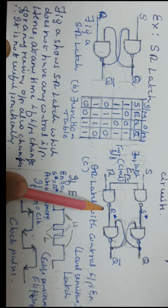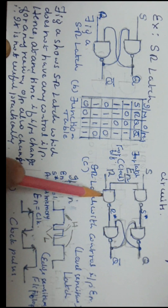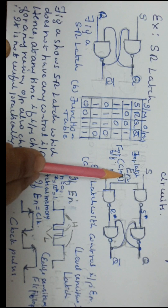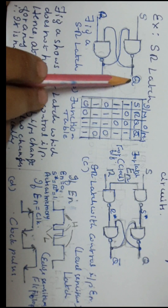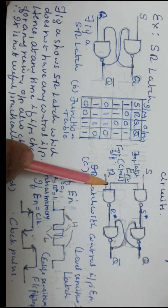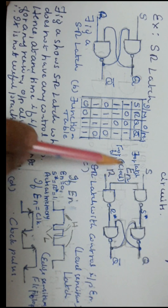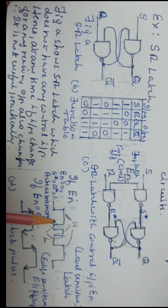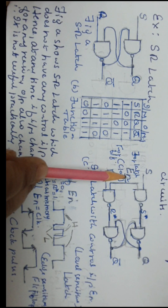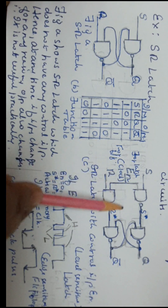Hence this circuit is modified by adding two more NAND gates. The two new inputs are tied together and given as an enable input, also called the control input. The same S and R inputs and the same outputs Q and Q-bar are present. This circuit now has a control input and can behave like either an SR latch or an SR flip-flop, depending on the type of enable input. If an enable bit is given, it is an SR latch; if a clock input is given, it is an SR flip-flop.